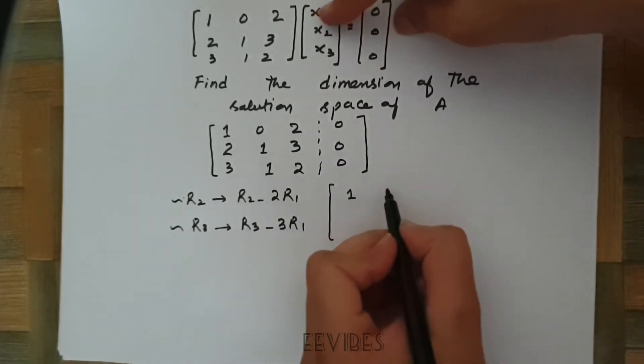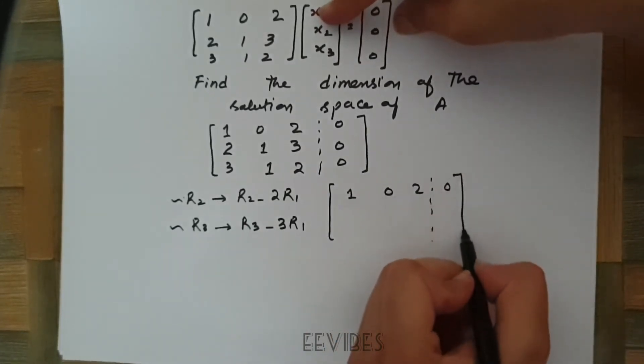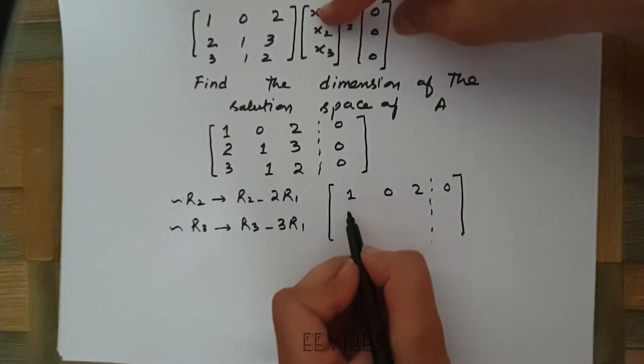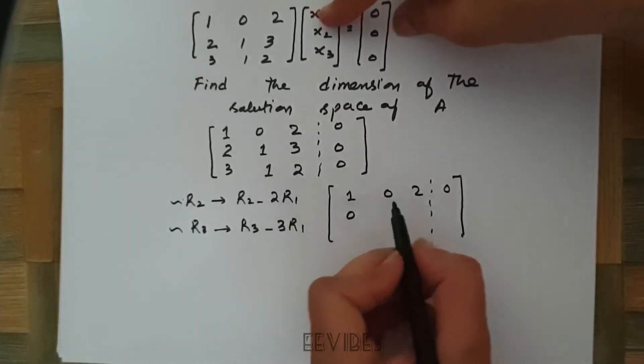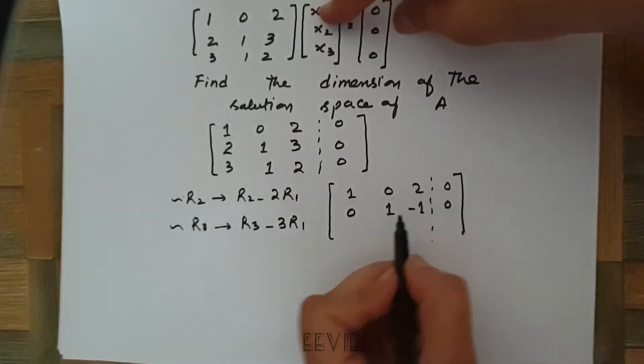The first row remains as it is. This entry will be equal to 0, then it will be equal to 1, and 3 minus 4 is equal to minus 1, again 0.